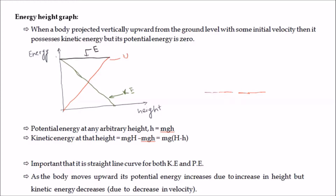Because of this initial velocity v, the body rises up to a height h. So suppose we have a body of mass m, and we give it an initial velocity v. Because of this initial velocity, it raises up to a height denoted by capital H and stops at that point.